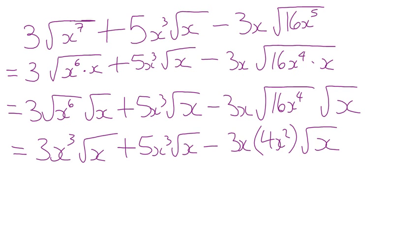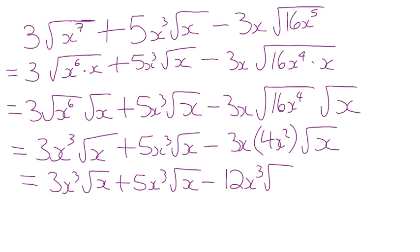One more line to simplify — we've got to collect these together: 3x cubed root x plus 5x cubed root x minus 12x cubed root x. These are all like terms — they have x cubed and root x. Like terms must have the same variable outside the radical sign and the same variable inside. So we get 3 plus 5 minus 12, and there are negative 4 of them.